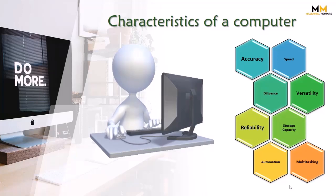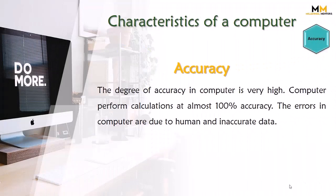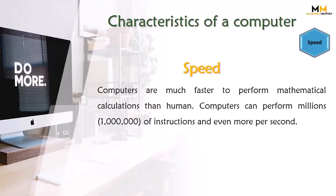These characteristics can also be called features or qualities of a computer. Now let's discuss them one by one. Accuracy: the degree of accuracy in a computer is very high. Computers perform calculations at almost one hundred percent accuracy. The errors in a computer are due to human mistakes and inaccurate data. The computer always gives accurate results; any mistakes are from the user's side or due to inaccurate data input.